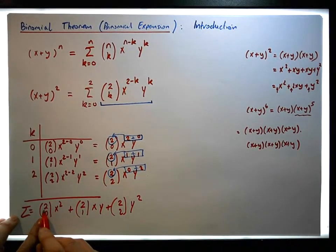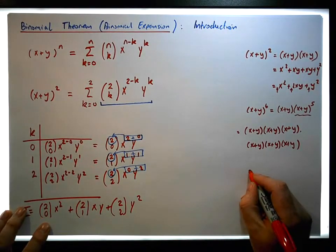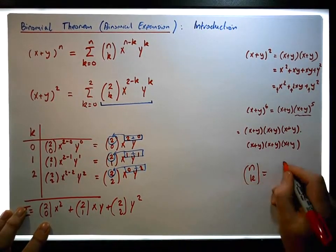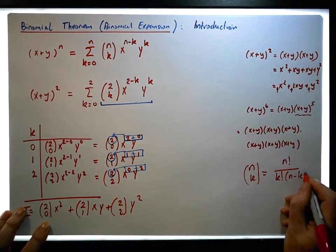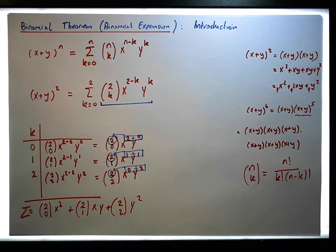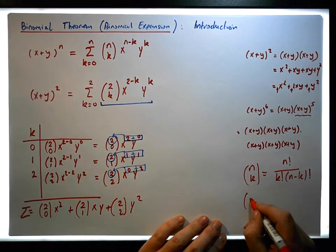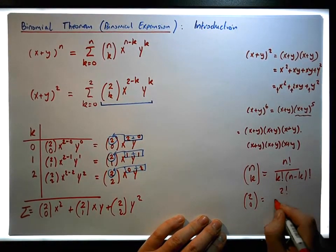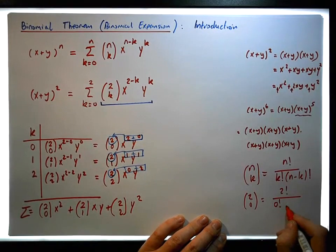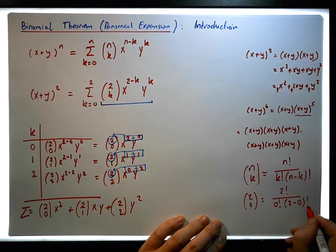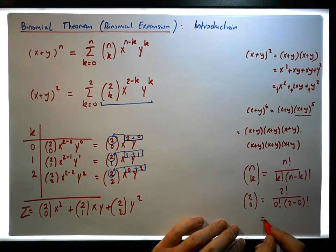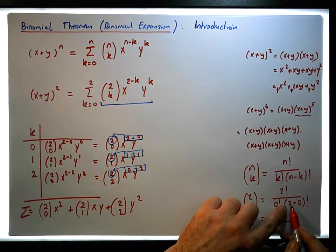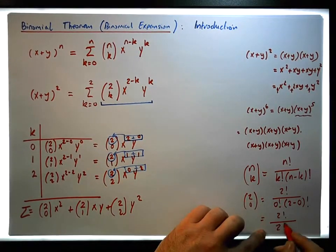These particular coefficients: nCk is the same as n factorial all over k factorial times (n minus k) factorial. Using this formula, 2C0 is two factorial all over zero factorial times (two minus zero) factorial. Zero factorial by definition is just one, so this is the same as two factorial all over one times two factorial, which gives us one.